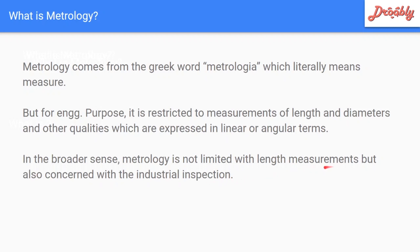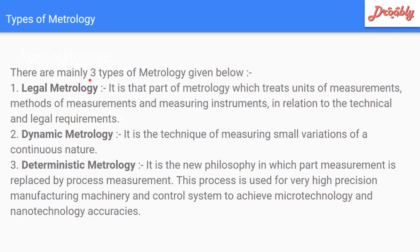Types of metrology: there are mainly three types. First is scientific or industrial metrology, which covers units of measurement, methods of measurement, and measuring instruments. Units of measurement include mm, inches, and meters, and must meet technical and legal requirements.